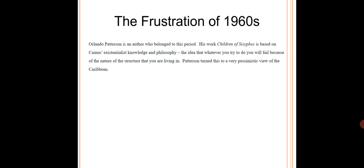He then talks about one particular writer of the 1960s — Orlando Patterson. He discusses one particular work called Children of Sisyphus, which is based on Camus' existentialist knowledge and philosophy. This is the idea that whatever you try to do, you will fail because of the nature of the structure you are living in. Orlando Patterson turned this into a very pessimistic view of the Caribbean.